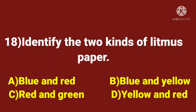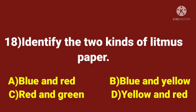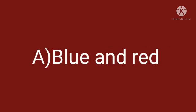Eighteenth question. Identify the two kinds of litmus paper. A. Blue and red. B. Blue and yellow. C. Red and green. D. Yellow and red. Time starts now. The answer is blue and red.